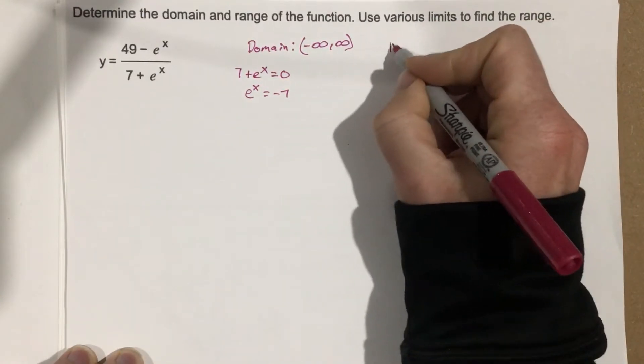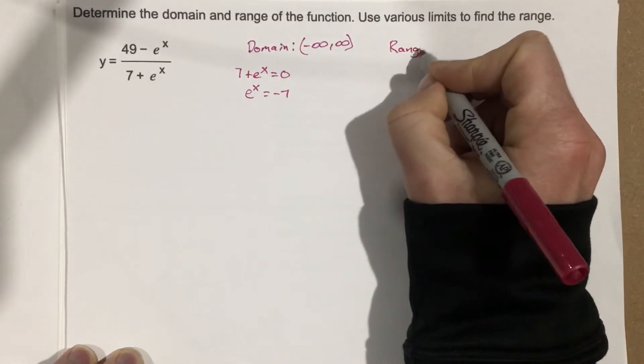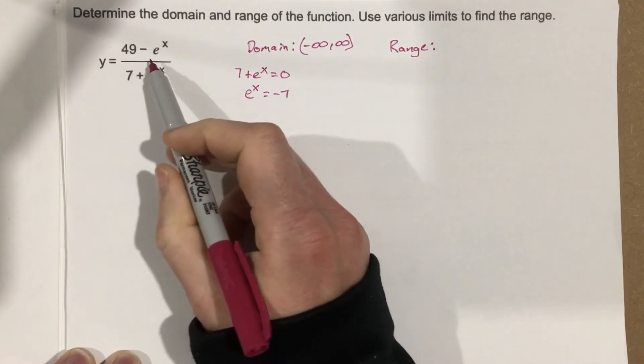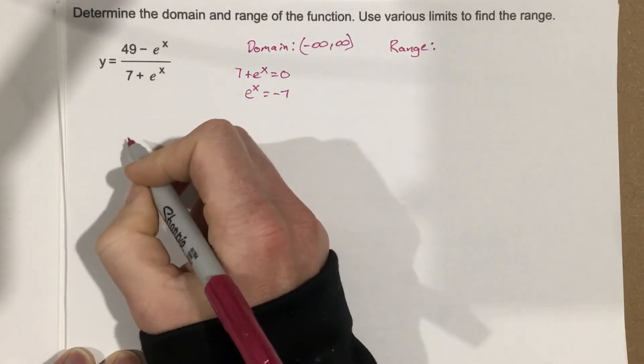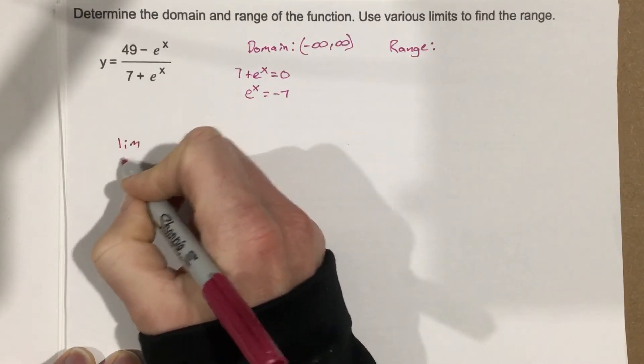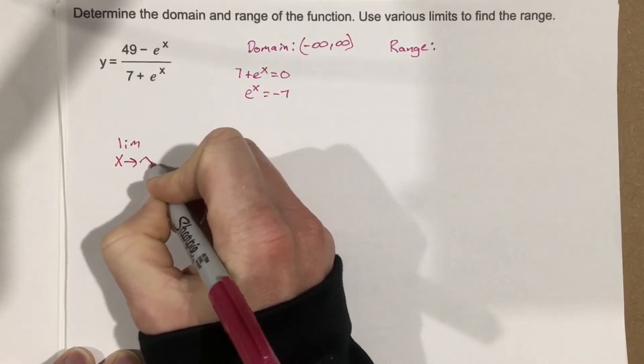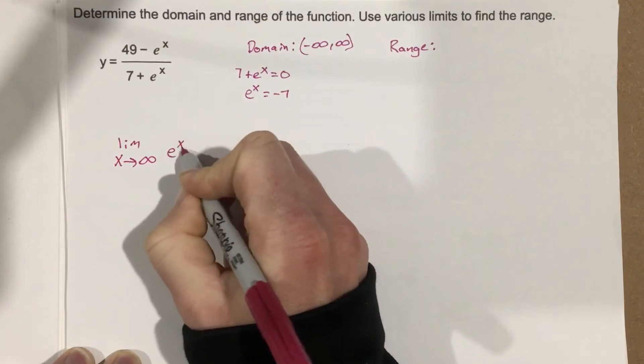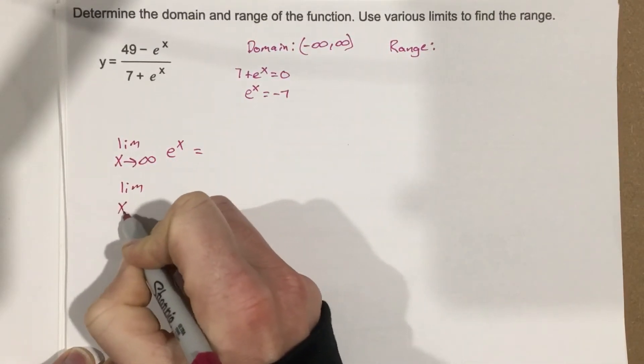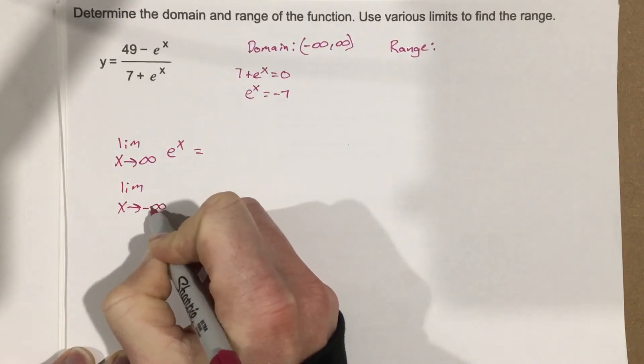Now we want to find the range. Well, in order to find the range, we need to use a couple of limits to do this. So let's go ahead and start with, what is the limit as x approaches infinity for e to the x? And what is the limit as x approaches negative infinity for e to the x?